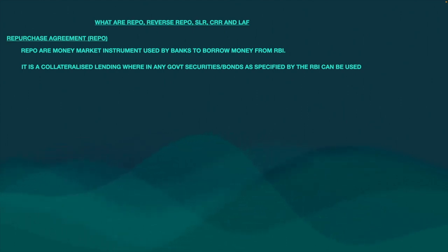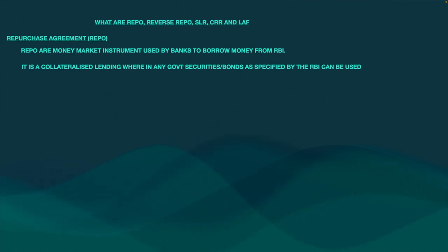Banks generate income by investing in some bonds. So they may be holding some bonds — government bonds — or they may be holding some State Development Loan, SDL bonds. So all these bonds and government securities which the bank is holding, they can give as collateral while taking money from the RBI.